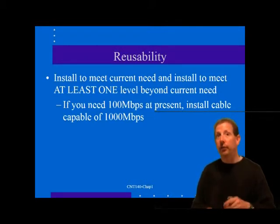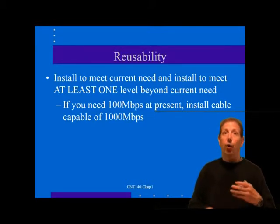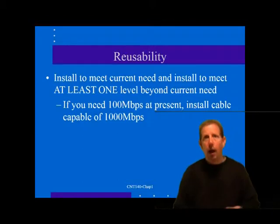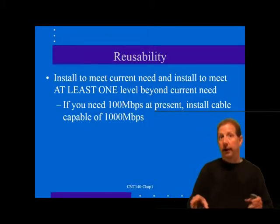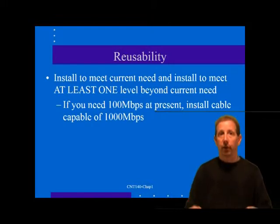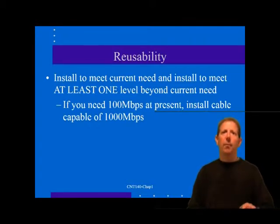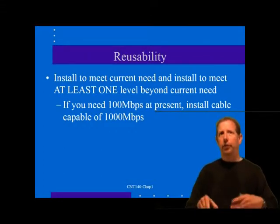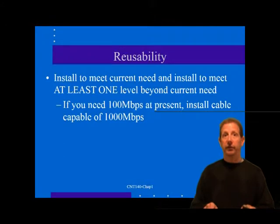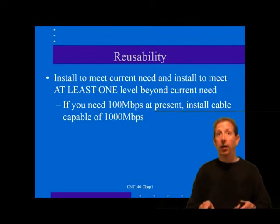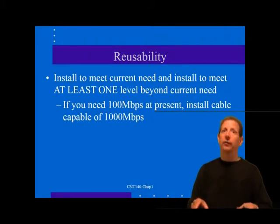The only practical approach to cabling futures is to determine a cabling method that meets at least the current widely deployed technology requirements. You should then consider installing to meet cabling standards that are at least one level beyond current requirements, if this is not cost prohibitive. For example, if you currently need 100Base-T, you should consider installing a cabling system that will support Gigabit technology, allowing your system to go through at least one generational upgrade without replacement.